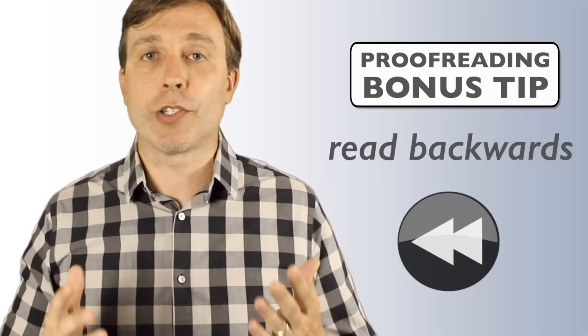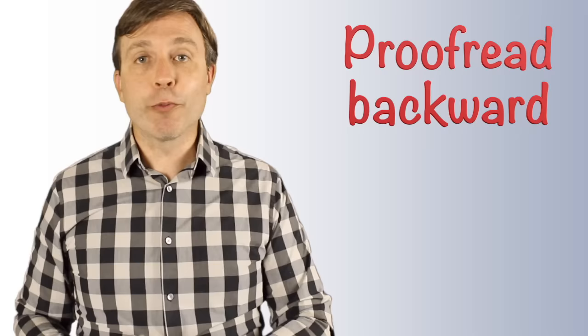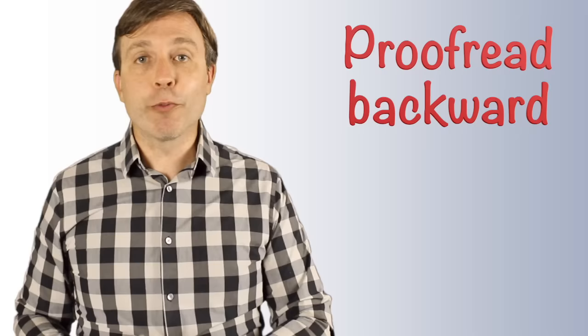And the reason for that is because you're really isolating the sentence. And you're able to look for spelling mistakes, grammar mistakes, punctuation. And in short, when you read backwards, you're focusing more on the text and not the ideas. So proofread forward from beginning to end if you want to get a feel for the rhythm and flow of your writing. Make sure that your ideas are logically ordered as well as check for repetition. Proofread backward if you want to really focus on the text and check for grammatical errors. And most importantly, just make sure that you proofread and do not skip this step.